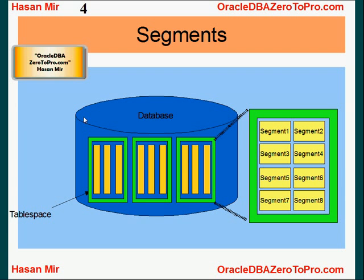If you break down a tablespace into physical components, those will be data files. But if you break it down into logical components, those will be segments. There is no one-to-one relationship between segments and data files — one segment could wholly reside in one data file, or could be split among multiple data files.